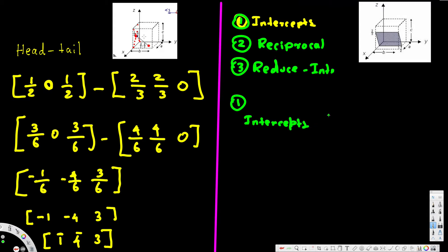For the first step, we find the x, y, and z intercepts. The x-intercept is 1/2 because it stretches half way. Since this plane is parallel to the y-axis, the y-intercept is infinity (no intersection). Extending the bottom part, it ends on the z-axis at negative 2/3.